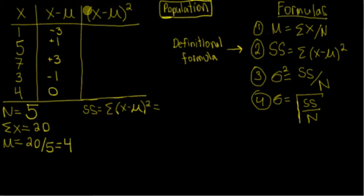Now we move on to the next column. It's x minus mu squared. So all we're going to do is square these values and put them into this column. Whenever you square a negative value, it becomes positive. So negative 3 squared is positive 9. 1 squared is 1. Positive 3 squared is positive 9. Negative 1 squared is 1. And 0 squared is 0.